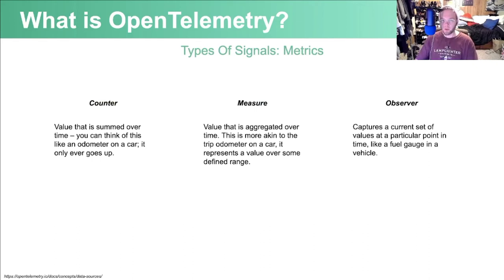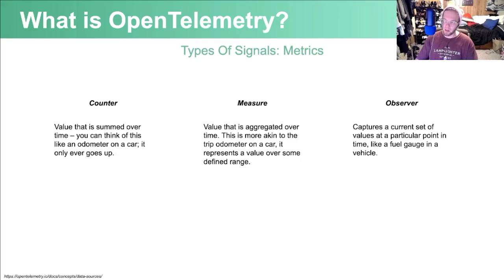Moving on to metrics — I think metrics are probably the most intuitive signal. They're split into a couple of categories. You can count things with a counter, which only ever goes up — like how many requests you receive, how many total bytes are computed, or how many requests go to different versions of an app. You can measure things like how long it takes to send responses. And you can observe things like how much CPU or RAM you might be using on a machine at a given time. These operations make up much of what I think of as traditional observability, existing in tools already built into operating systems and IaaS providers.